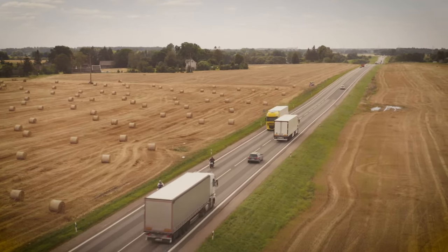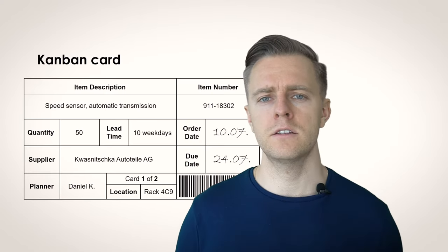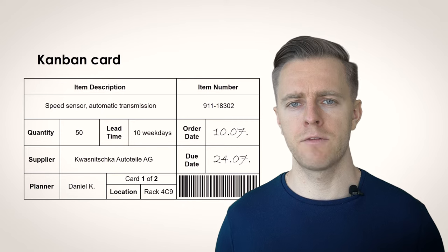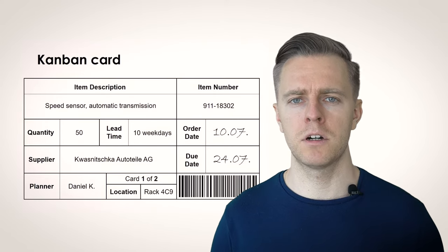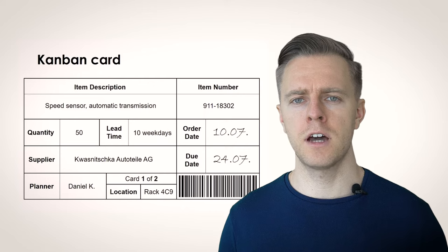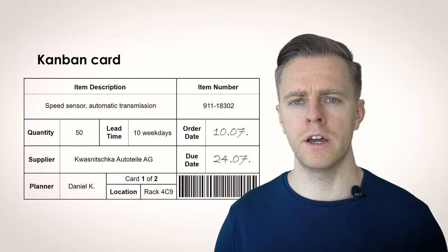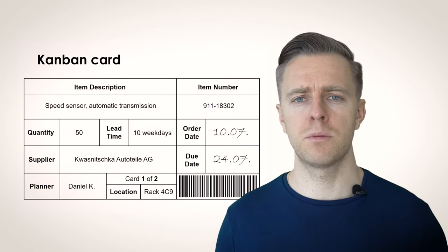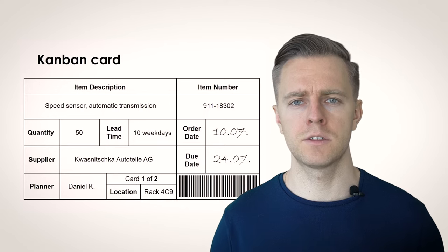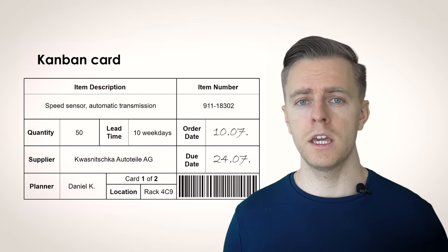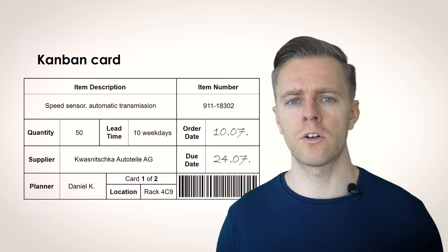The signal is usually visualized with Kanban cards, containing all relevant information for the replenishment of material. Here is an example of a Kanban card. It contains information such as the name of the item, the item number, the quantity for a new order, the time it takes for a new order to arrive, the supplier, the responsible person, the place where the items are stored, and so on. Even barcodes can also be placed on Kanban cards to facilitate tracking or automatic invoicing.